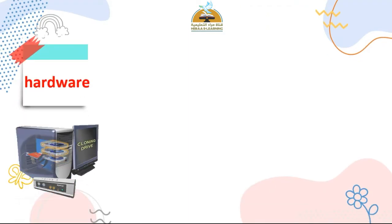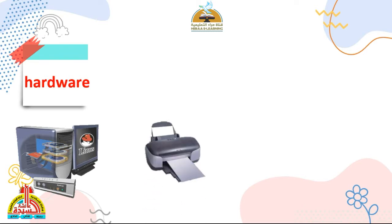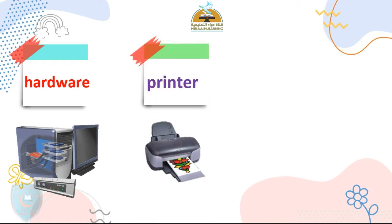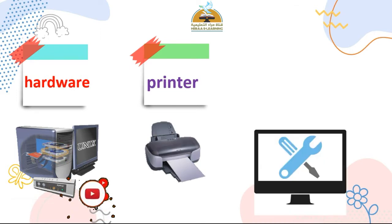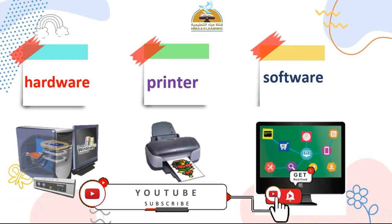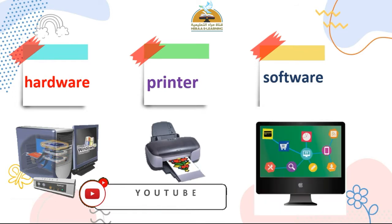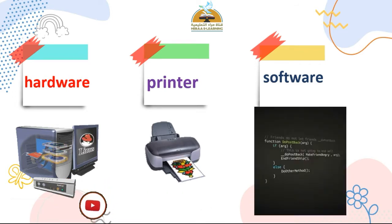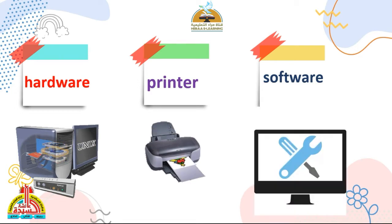عندنا hardware — يعني الأجزاء الصلبة. عندنا كلمة تانية: printer — طابعة. عندي software — برنامج، برامج الحسوب. يبقى البرامج بتاعة الحسوب. يبقى أنا عندي hardware اللي هو الأجزاء الصلبة، printer اللي هو الطابعة، software برامج الحسوب.